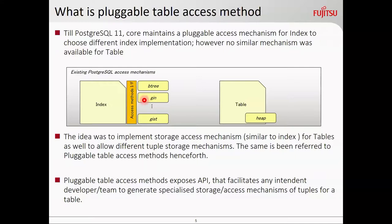But for the table, heap was the only one, and it was tightly coupled and integrated inside the core — there was no real separation of heap as far as any interface is concerned. There is a presentation by Andrea as well where he identified how the architecture of the whole core was tightly coupled along the heap. That was also one of the challenges while making this project possible — how to separate the interface on top of table to allow heap to work with it. The idea was to implement a storage access method, just like indexes, to allow different tuple storage mechanisms — that's what is referred to as pluggable table access method.